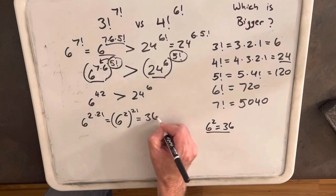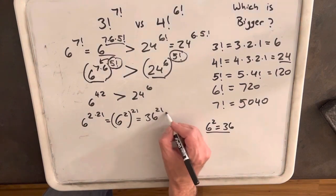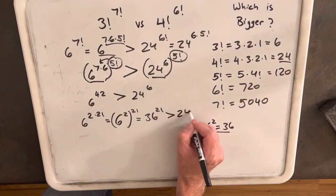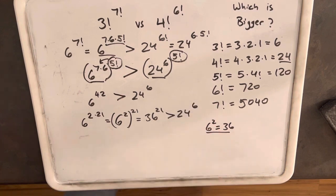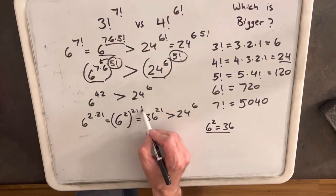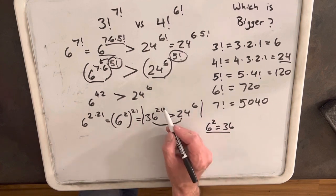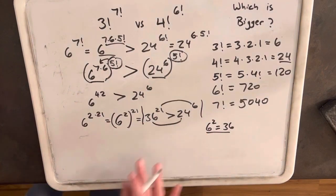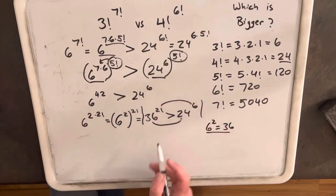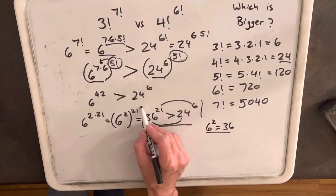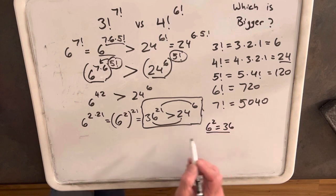Now, at this point, we can see that this statement has to be true because 36 is greater than 24 and 21 is greater than 6. When we have a greater base and a greater exponent, then we can say that this is a true statement, that 36 to the 21 is greater than 24 to the 6.